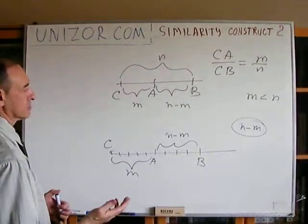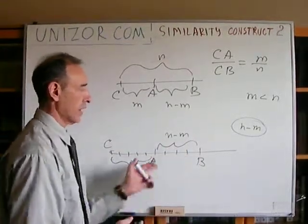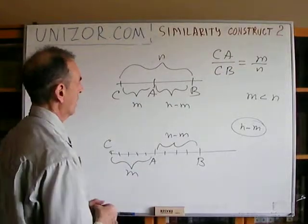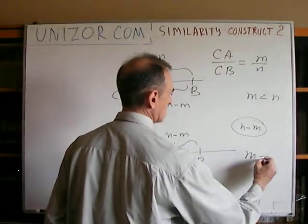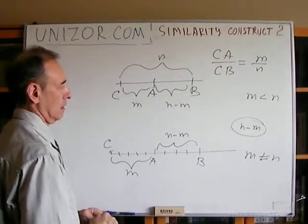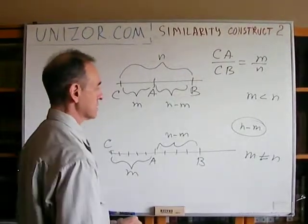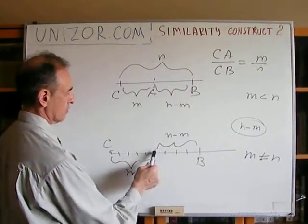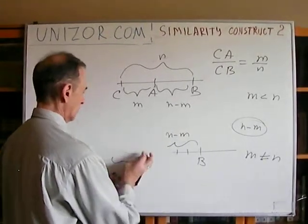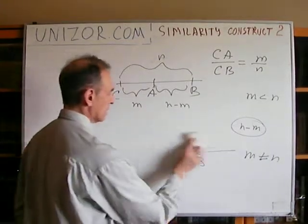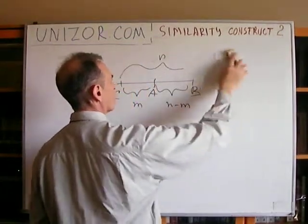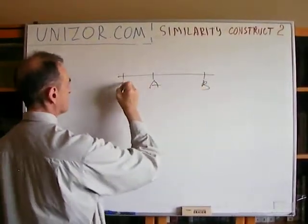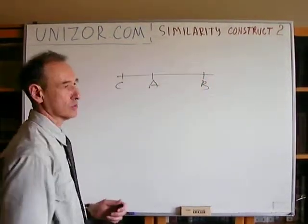It's important to note that N should not equal M, because then we cannot divide AB into N minus M parts — that would be zero parts, which is impossible. For all cases where M is not equal to N, everything is fine, including when M equals zero, which means C coincides with A. In the case M equals N, there is no solution, because we cannot point to anything outside such that the two segments have the same length.